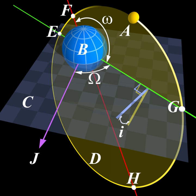In land navigation, azimuth is usually denoted alpha and defined as a horizontal angle measured clockwise from a north baseline or meridian.